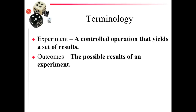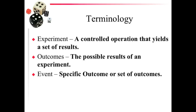An event is a specific outcome or set of outcomes, and typically it's what you're looking for out of the experiment. So you could say, I'm going to roll a die and look for the event of rolling a one — that one would be the specific outcome. You could also say I'm going to roll the die and look for odd numbers, and now we have a set of outcomes because it could be one, three, or five.